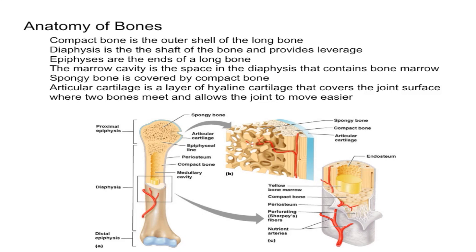In this video I'm going to talk about the anatomy of bones and describe the different parts of the bone and their functions. To begin with, the compact bone, also known as the dense bone, is the outer shell of the long bone — and that's what you're going to see when you look at bones mostly.